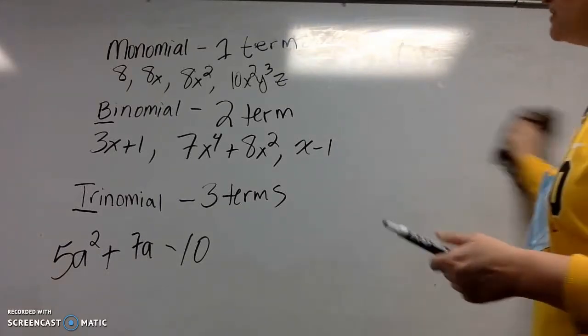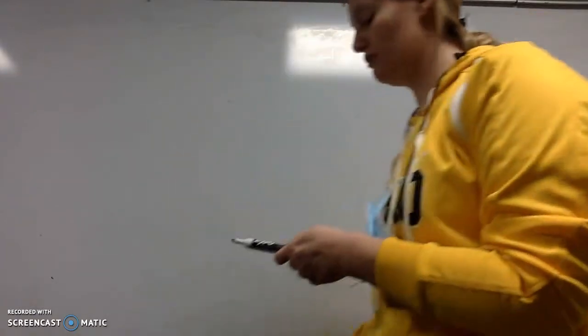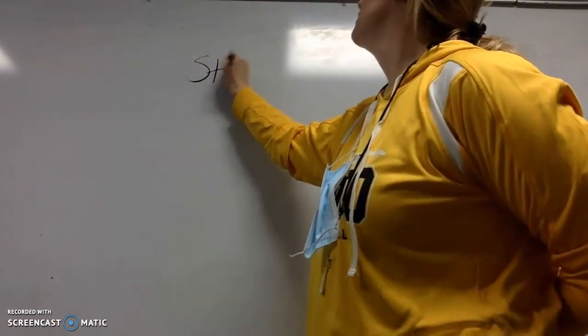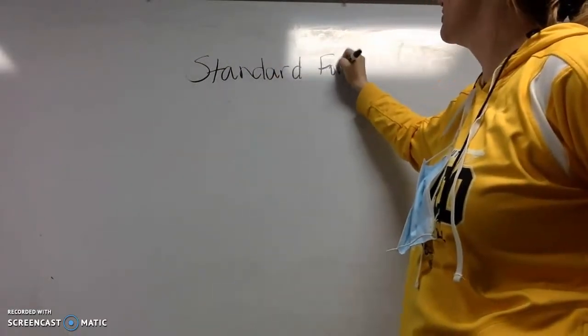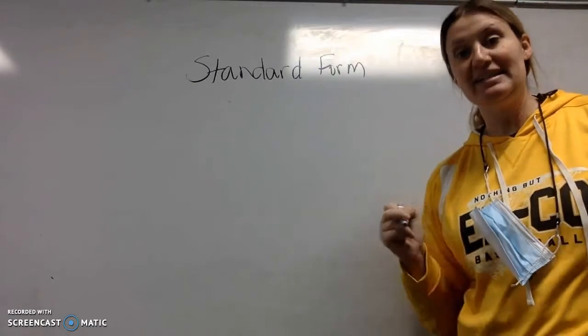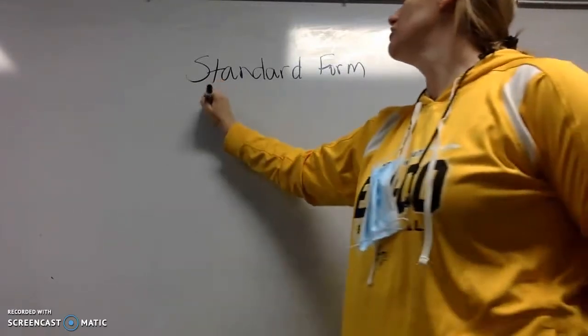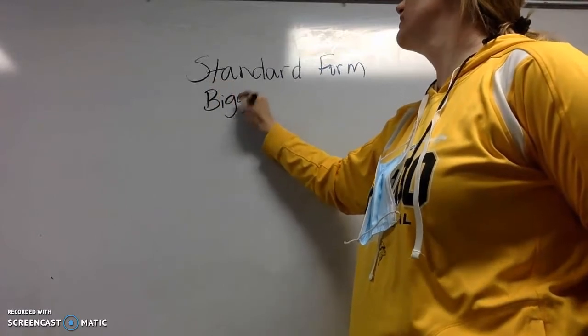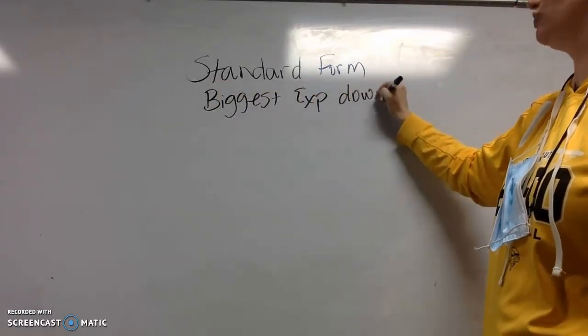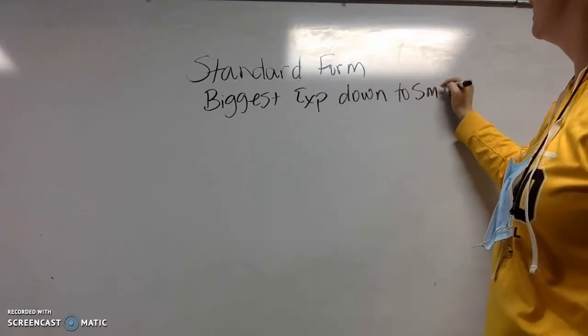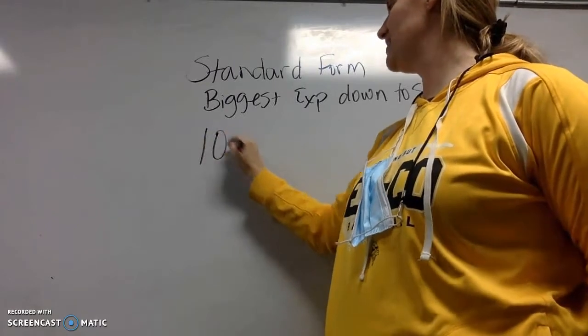Then we have something called standard form. Standard form is how you should write polynomials. And standard form basically means that you should write every polynomial, biggest exponent down to smallest.